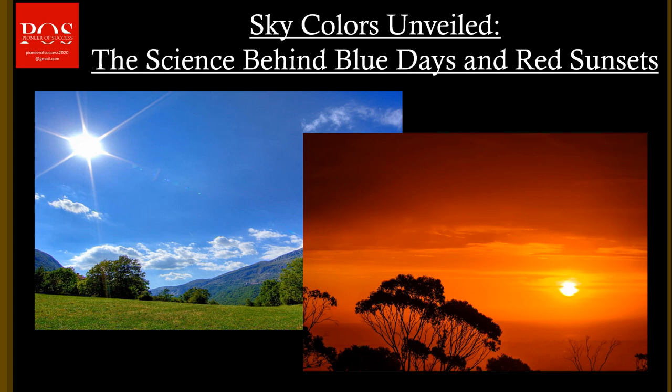Hello viewers and welcome to Pioneer of Success. Continuing with the series on Raman spectroscopy, in the last video we explored about the scattering of light. Let's revisit it in terms of atmospheric scattering to understand why the blue coloration of the sky or the red coloration of the sky occurs during the sunrise, sunset, or the different times of the day.